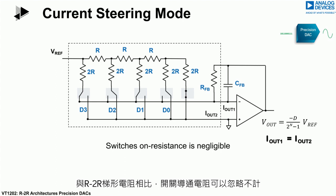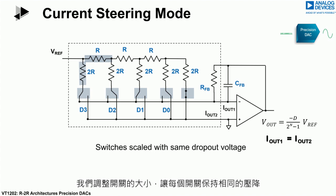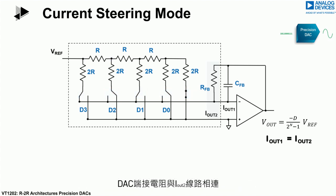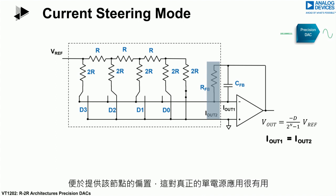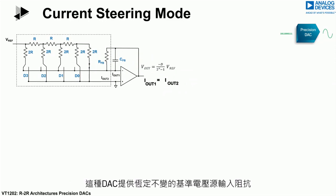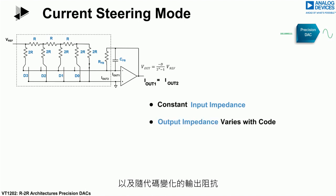The switch on-resistance is negligible when compared with the R2R ladder resistors. The switch sizes are scaled to ensure that this does not have an impact on the DAC's linearity performance by maintaining the same voltage drop across each switch. The DAC termination resistor is tied to the I-out 2 line, which facilitates the biasing of this node for use in true single supply applications.